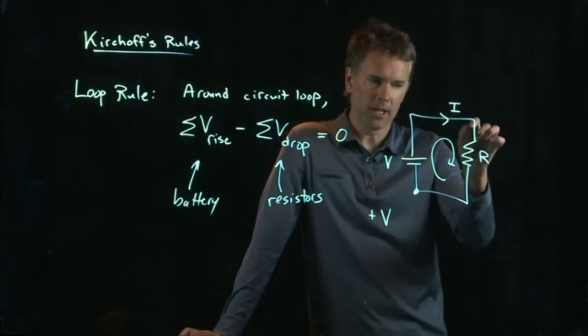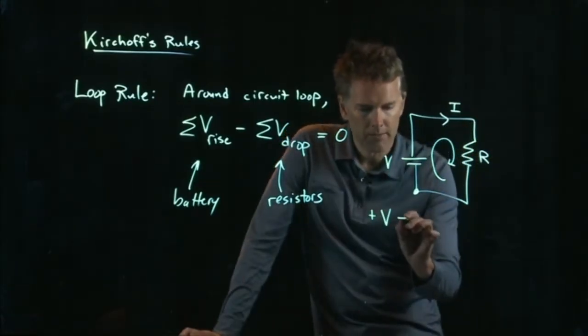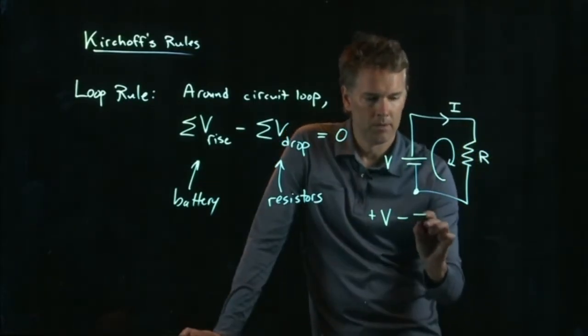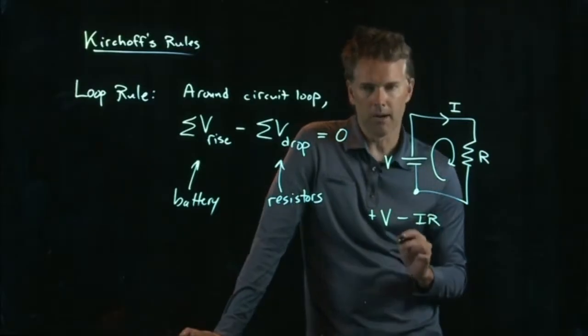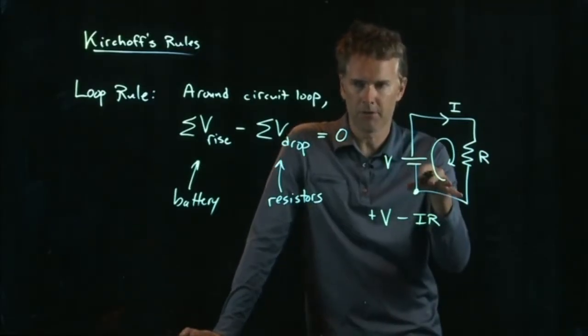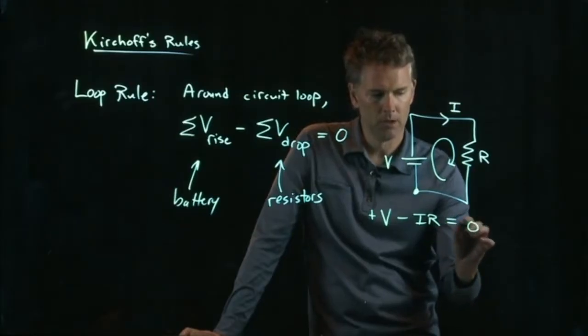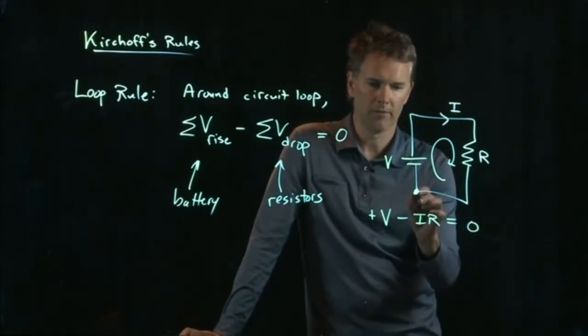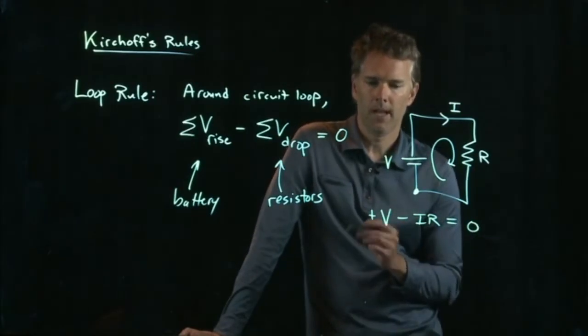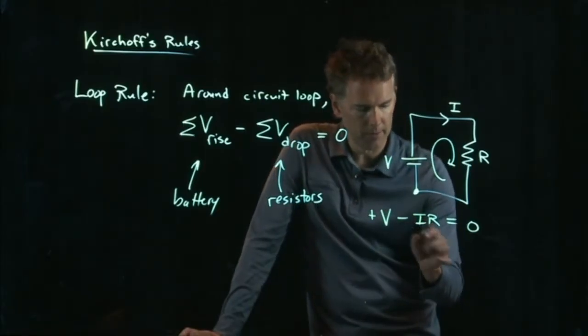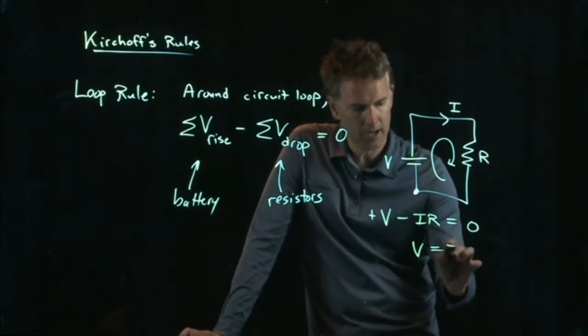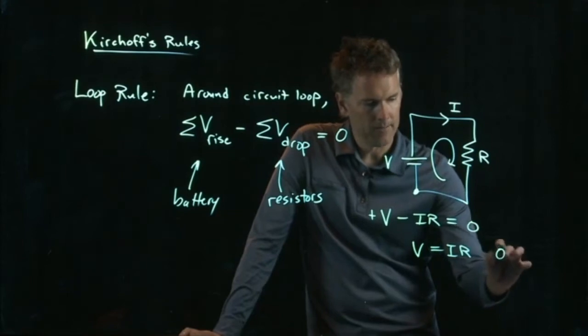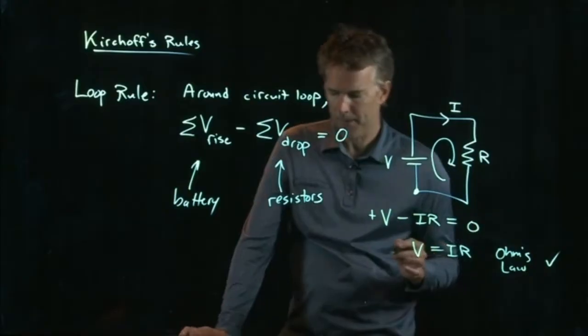The next thing is I go through a resistor, and so that is a drop of IR. And that's it for this simple circuit, and so I get back to zero where I started from. And this is, of course, just Ohm's law, right? If I move IR over to the other side, I get that.